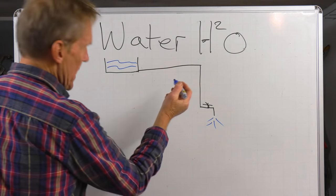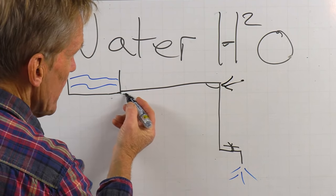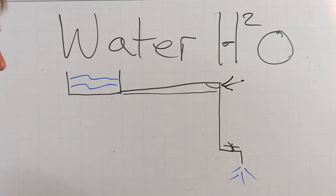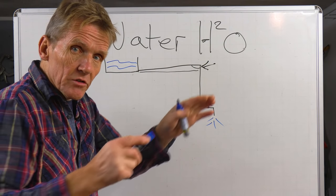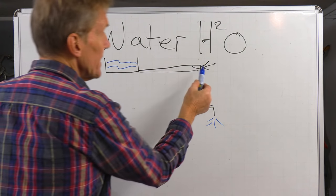What happens is the air collects in that point there, that high spot. So here is our true level, and the plumber, for one reason or another, has gone slightly uphill. Could be the joists in the house are running that way, so he's just followed the line of the joists.